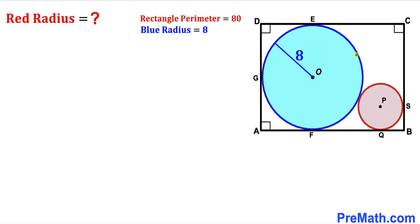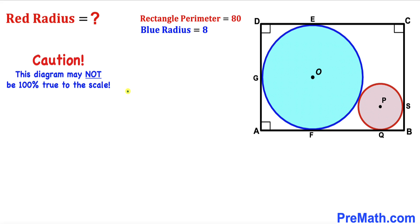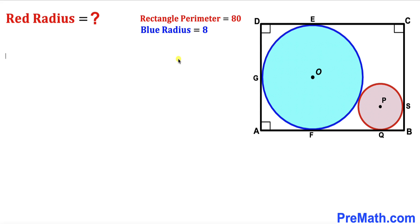Welcome to PreMath. In this video we have two circles fully inscribed in rectangle ABCD, such that the radius of the blue circle is 8 with center O, and the center of the red circle is P. These circles are tangent to each other, and the perimeter of rectangle ABCD is 80 units. Our task is to calculate the radius of the red circle. Please keep in mind that this figure may not be 100% true to scale.